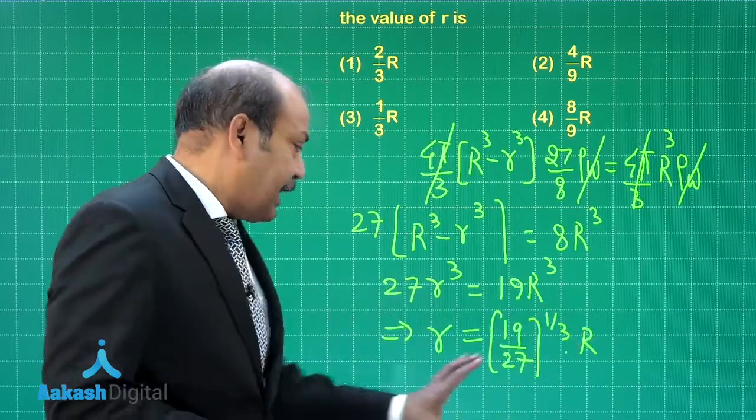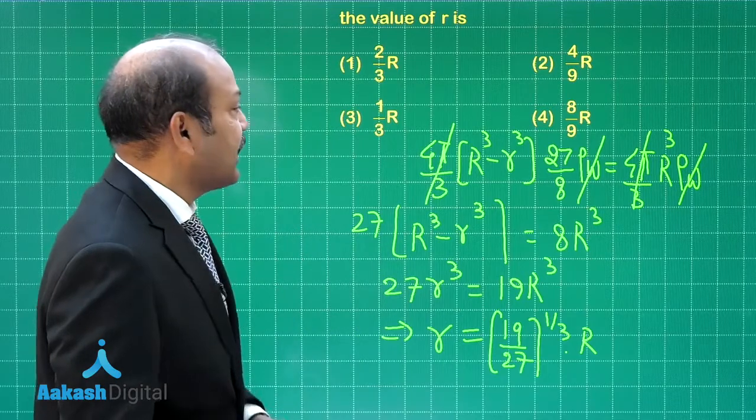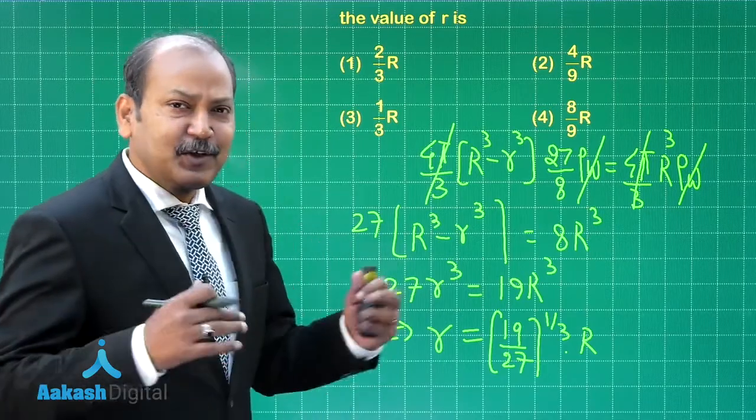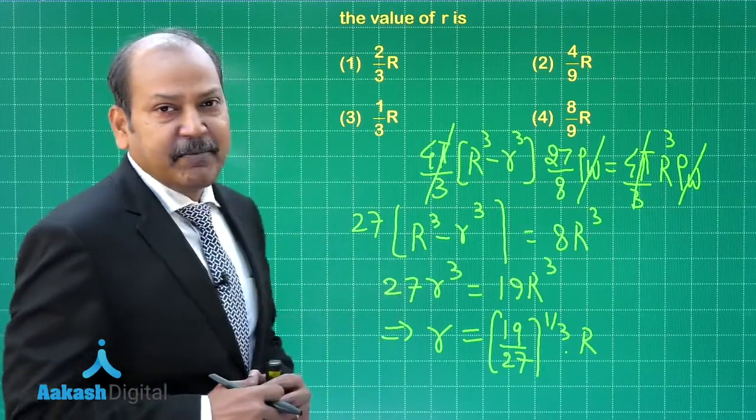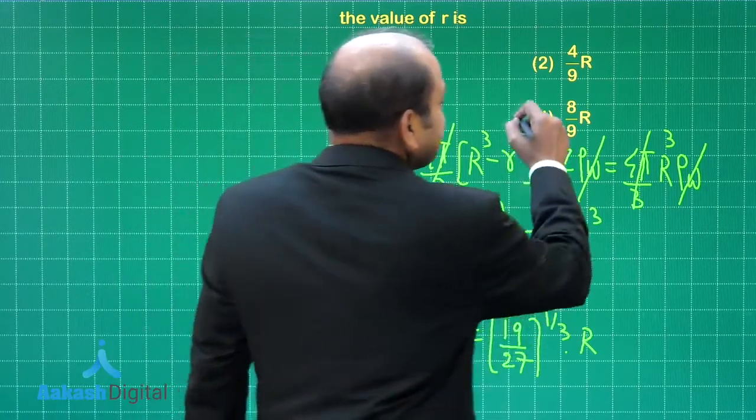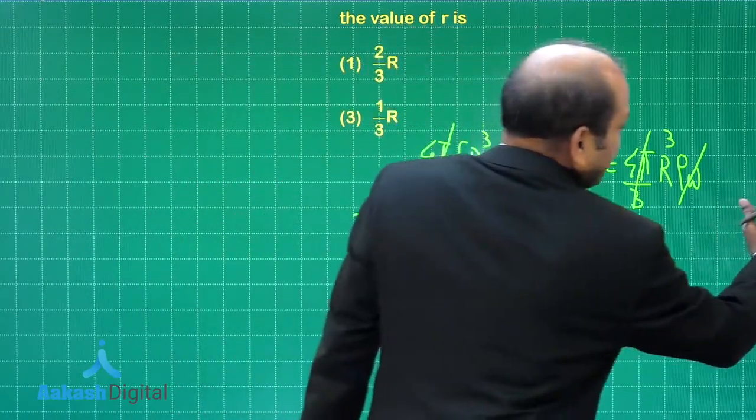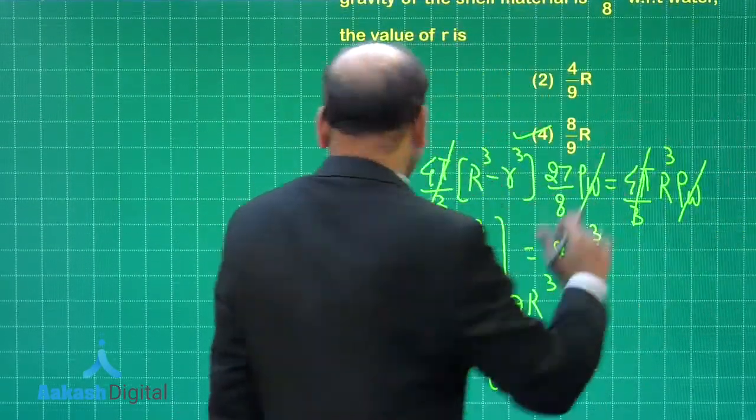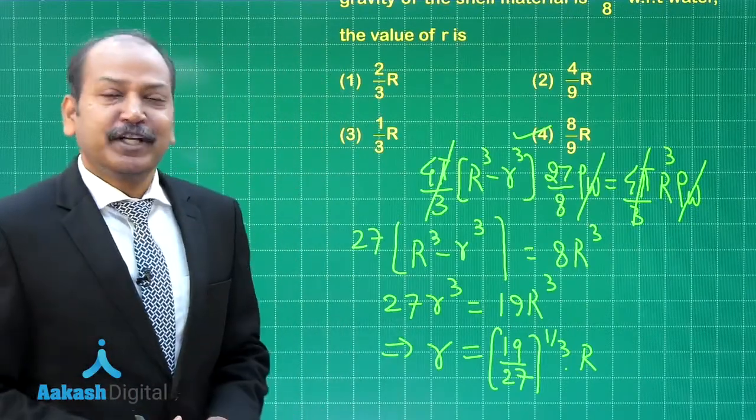If we evaluate this, the value of small r comes out as close to 8R by 9. So that means for this particular question, option 4 is the correct one. Let us go to the next question now.